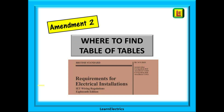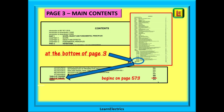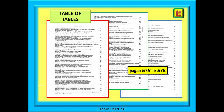Let's start by looking at where to find the table of tables in the regulation book — we'll be using the brown book, Amendment 2. Begin by turning to the main contents page on page 3. At the bottom of page 3 you will see table of tables, and scanning along to the right hand side you will find that it begins on page 573. There are three pages: pages 573, 574, and 575, but their usefulness is enormous.